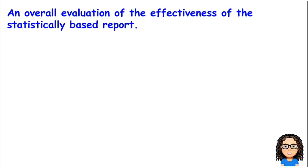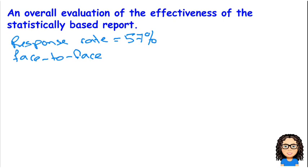So let's jot down a couple of quick notes to remind ourselves. There was a response rate of 57%. It was a face-to-face survey done in the home. We don't know what the sampling method was—the sampling method is unknown.